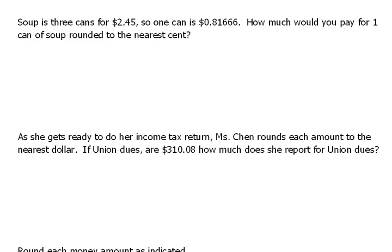Let's practice rounding. This problem says soup is three cans for $2.45, so one can would be $0.81666. How much would you pay for one can of soup rounded to the nearest cent?